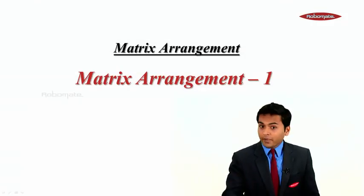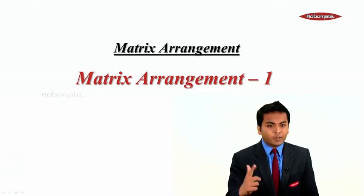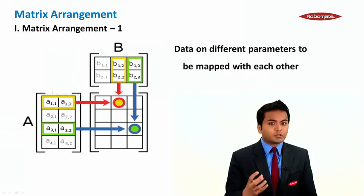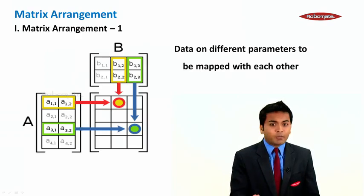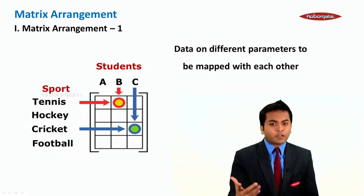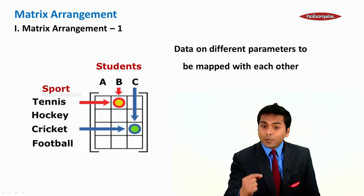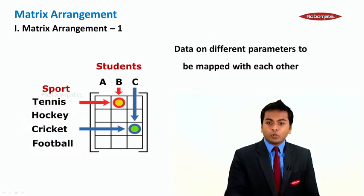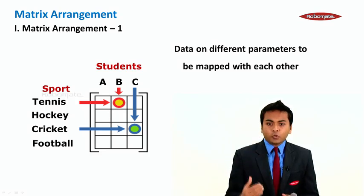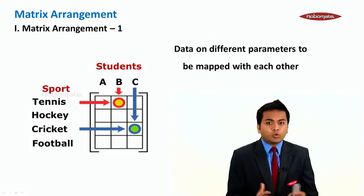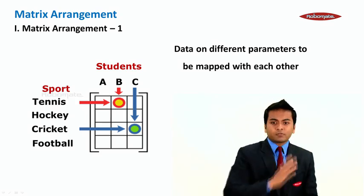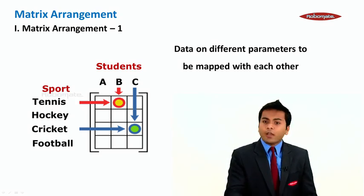Let's study matrix arrangement, part 1. What is matrix arrangement? Basically, data on different parameters are to be mapped with each other. For example, there are three students A, B, and C and four sports: tennis, hockey, cricket, and football. B likes tennis and C likes cricket. Some information will be given about students who like different sports, and we need to make a grid and map each student to their sport.